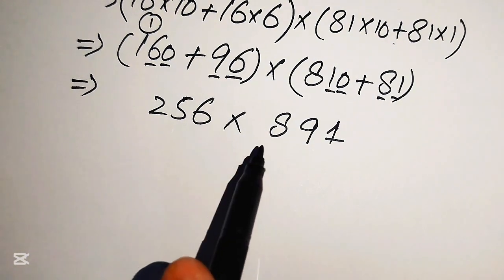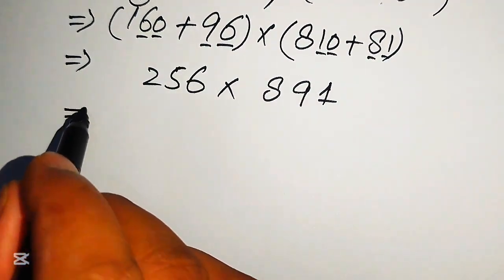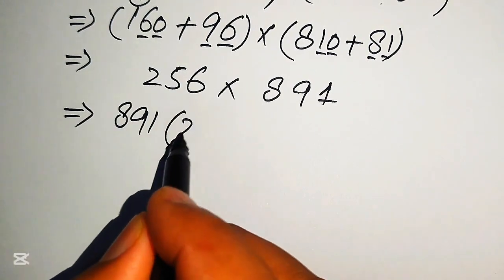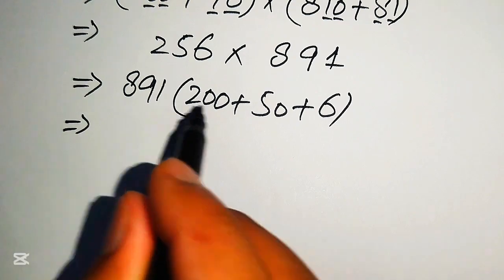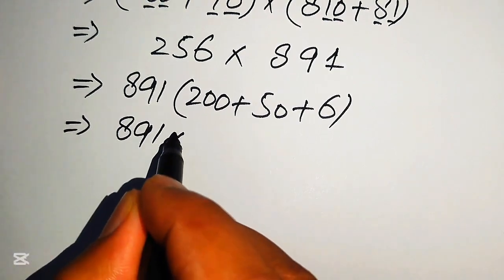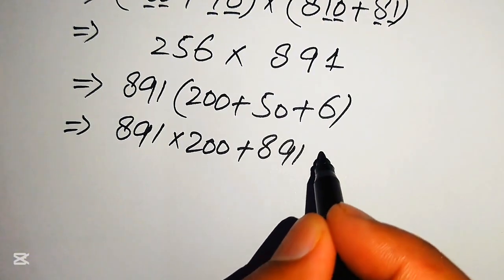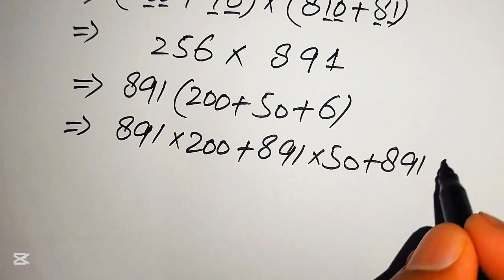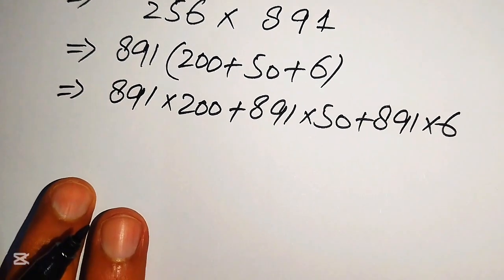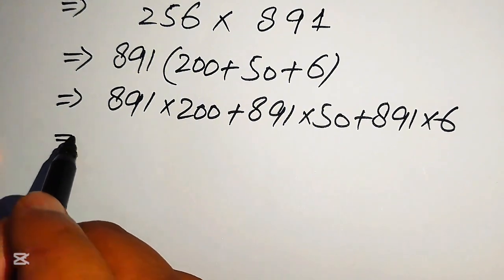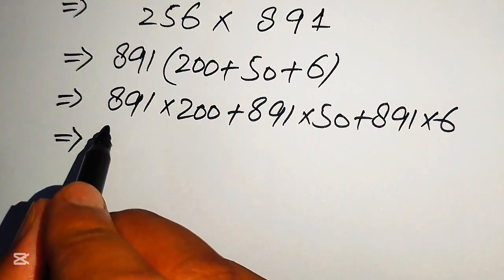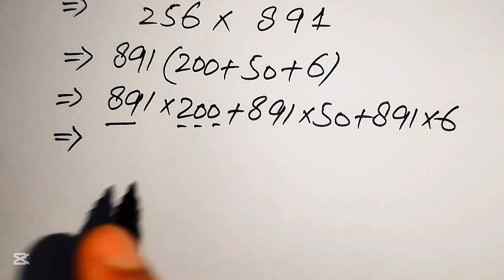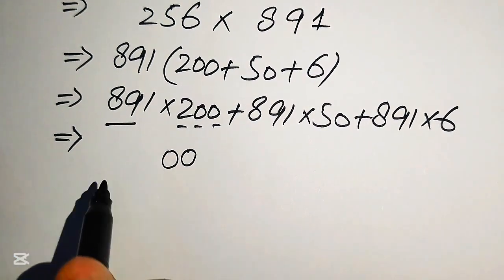Our final step is to multiply 891 by 256. We rewrite 256 as 200 plus 50 plus 6, then distribute: 891 multiplied by 200, plus 891 multiplied by 50, plus 891 multiplied by 6. I'll show you a trick for multiplying these larger numbers without a calculator.